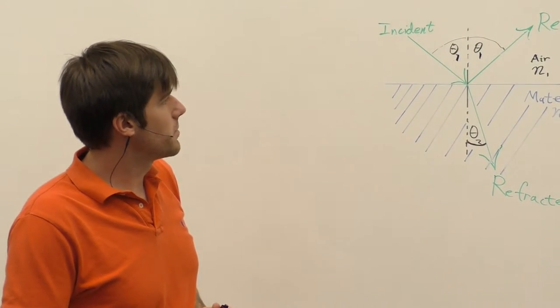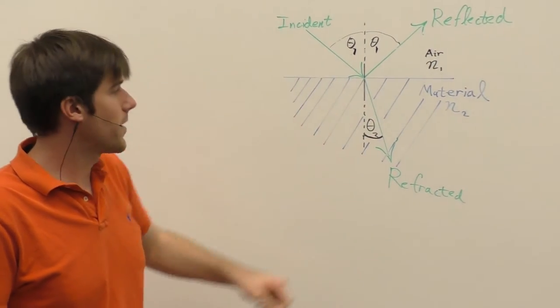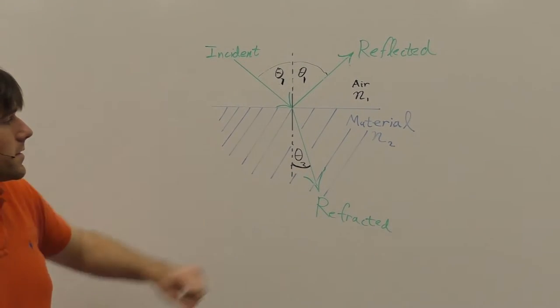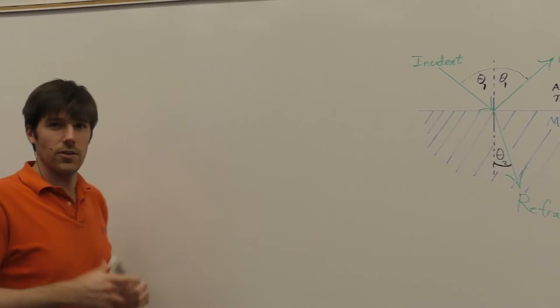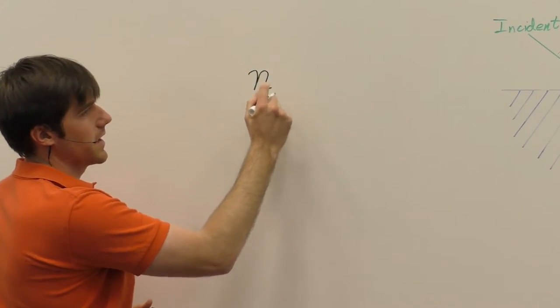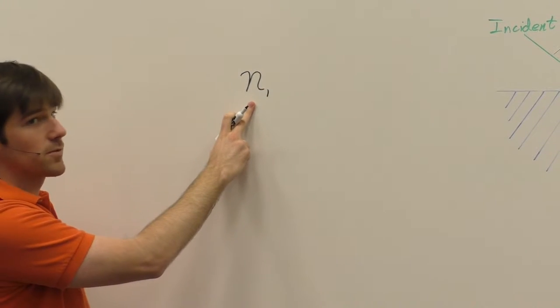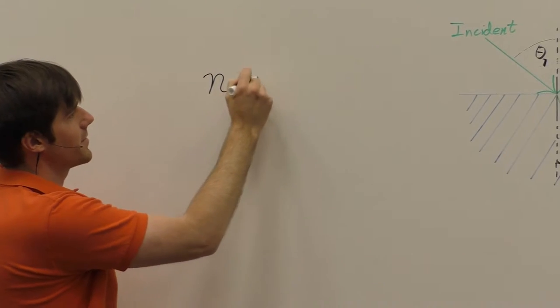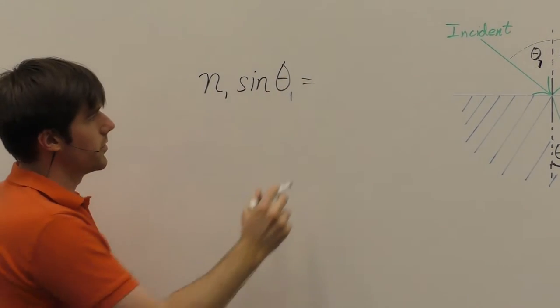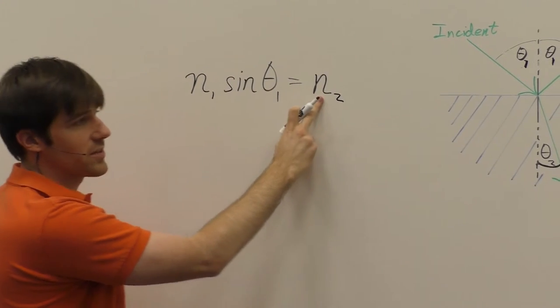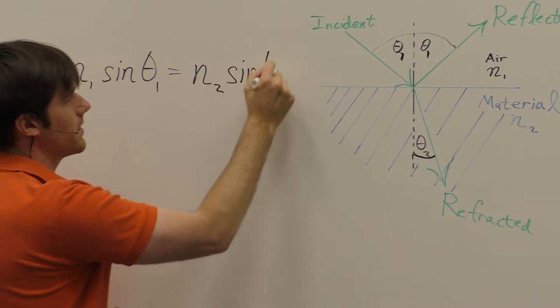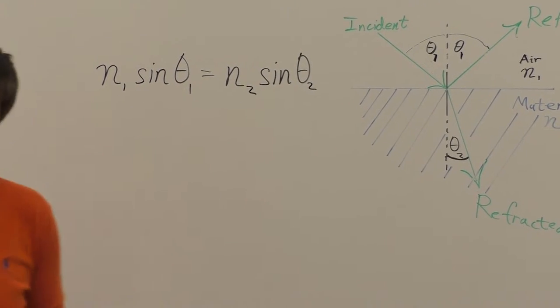Now another portion of the beam is transmitted or refracted. But the angle in which it's refracted is dictated by Snell's law, which is the law of refraction. Snell's law tells us that the incident beam, which has the index of refraction of N1 times sine of the incident angle, is equal to N2, which is the index of refraction of the material, times sine of the refracted angle, theta 2.